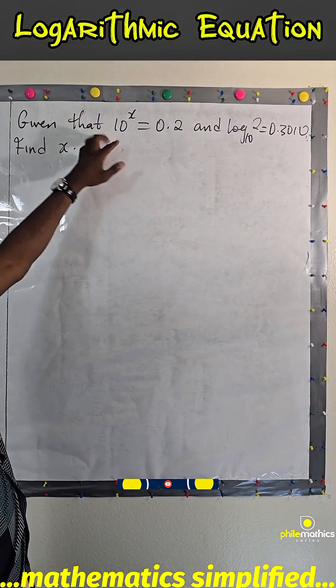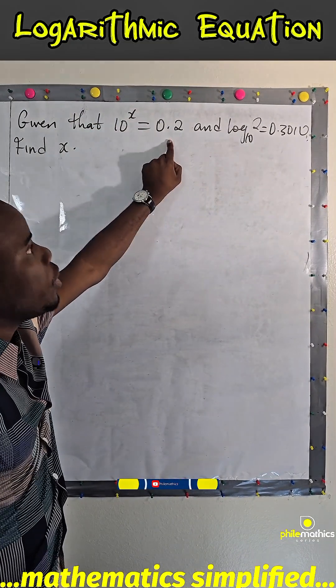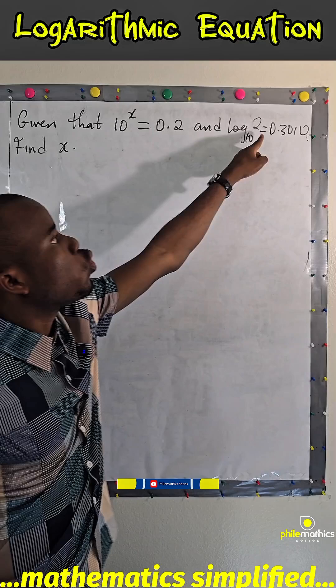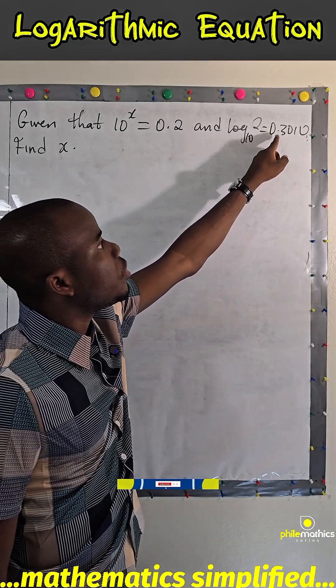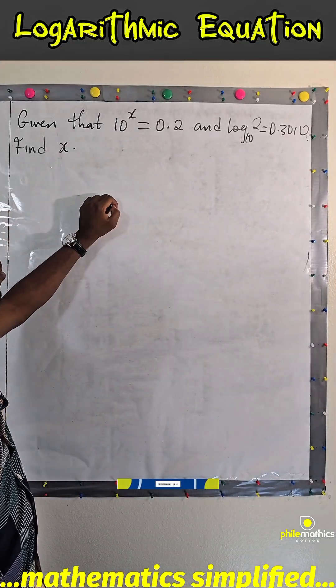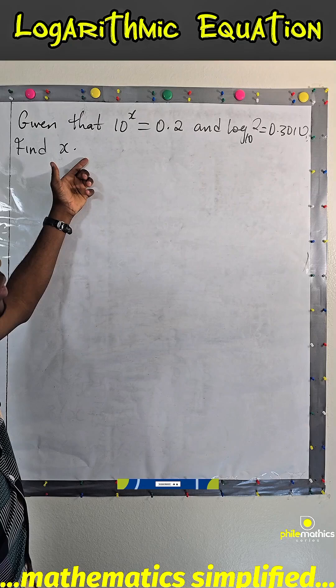In this problem, we are given that 10 to the power x is 0.2 and log 2 to base 10 is 0.3010. We have to find x.